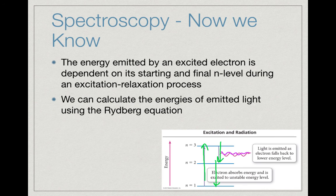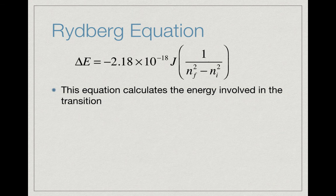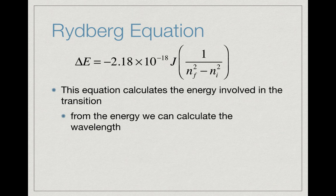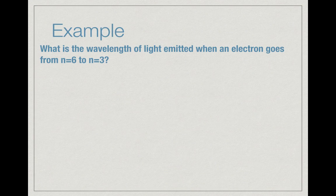Now that we have our energies due to the Rydberg equation, we can calculate the energy lost or gained in going between either an excitation or a relaxation process, and we can calculate the frequency and wavelength of light. The change in energy ΔE equals negative 2.18 × 10⁻¹⁸ joules times (1 over n_final squared minus 1 over n_initial squared). This equation calculates the energy involved in a transition between two n levels, and from that we can calculate the wavelength. There's an example we will work out in class.